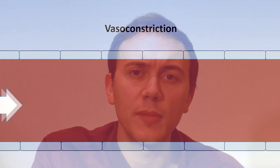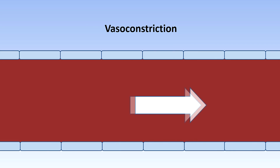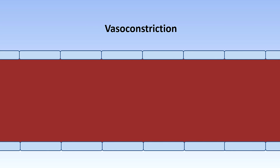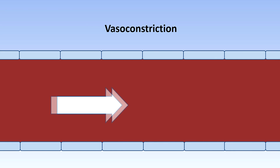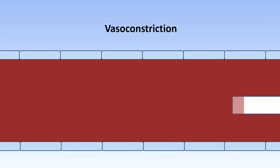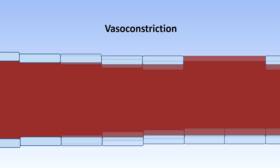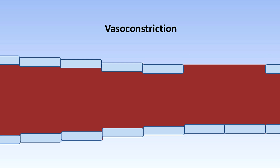First of all we need to think about vasoconstriction, which is the first thing that happens when a blood vessel is damaged. So our blood vessel gets damaged, it constricts and then that limits blood flow.